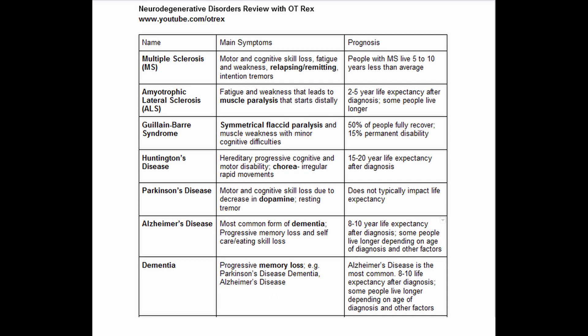ALS also has fatigue and weakness, but it leads to muscle paralysis that starts distally. For someone with ALS, they are likely to have a life expectancy of 2 to 5 years after diagnosis, though some people live longer.